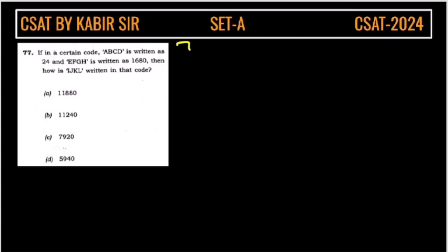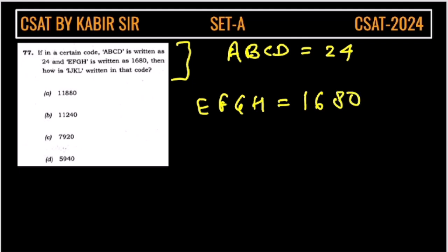Now, let us see this question. This question is from coding and decoding. In a certain code, ABCD is written as 24, and EFGH is 1680.